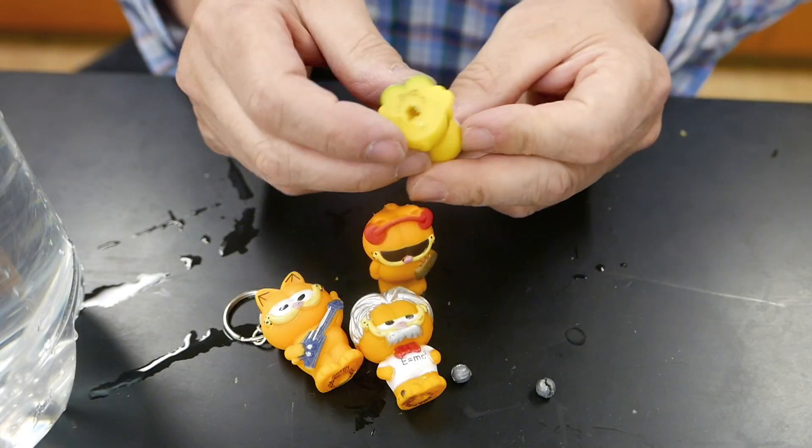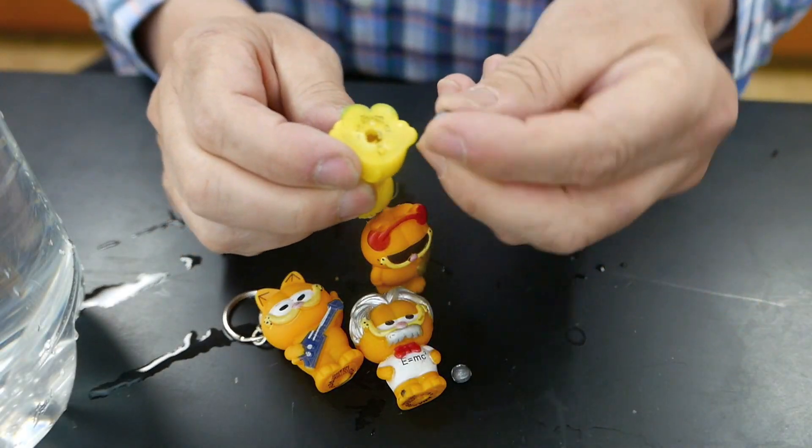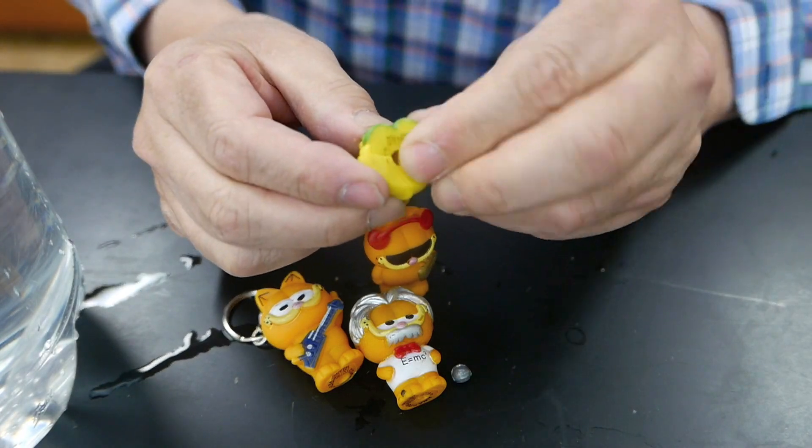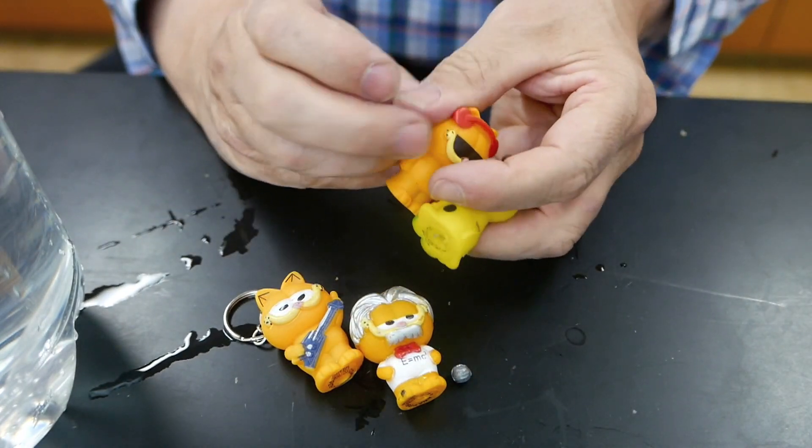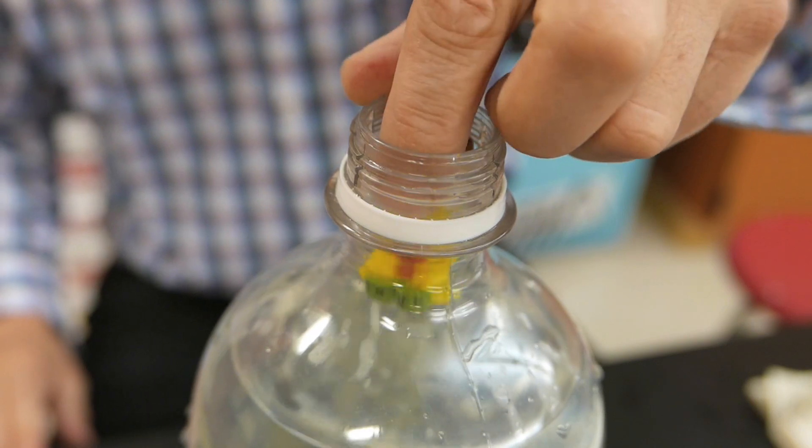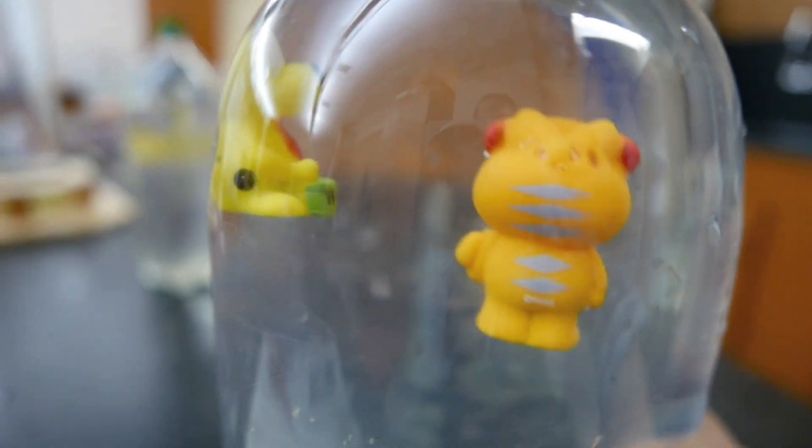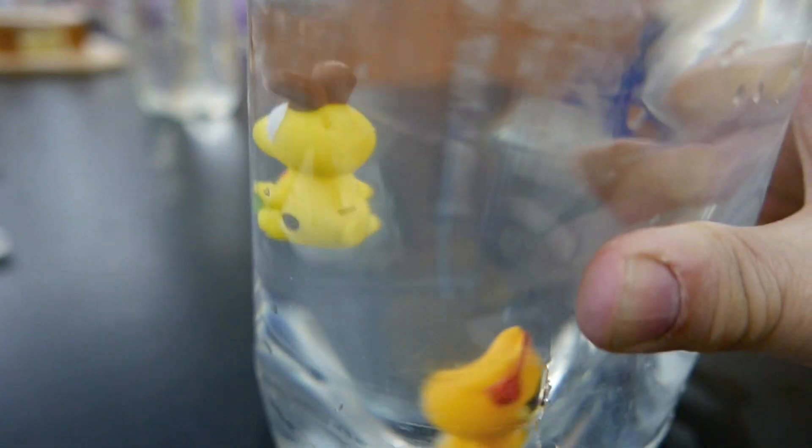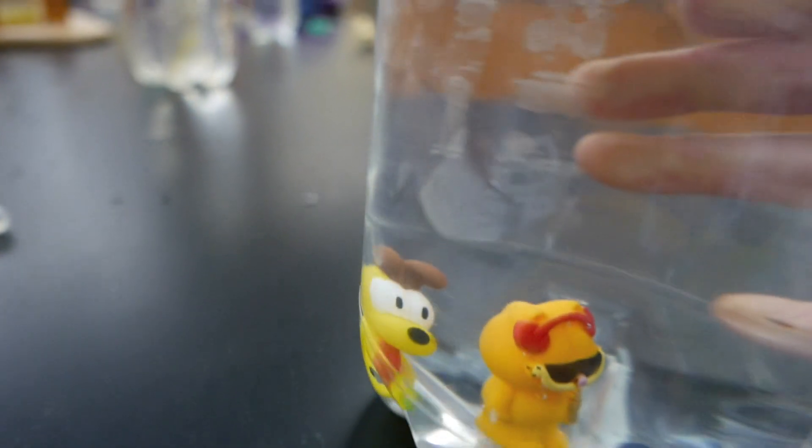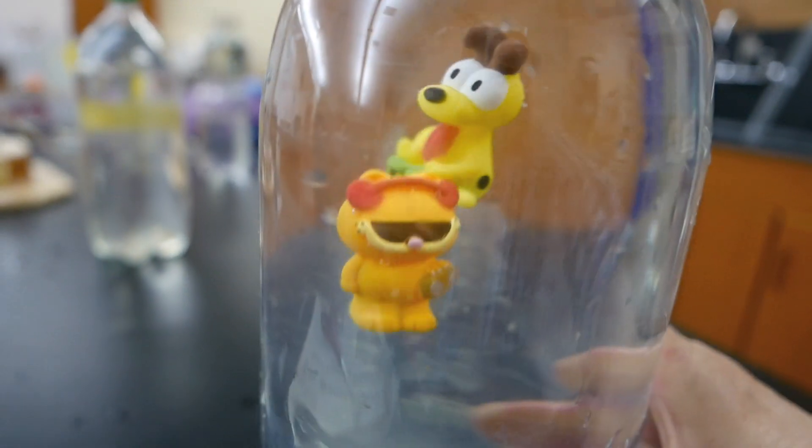These plastic keychain figures make great divers also. I simply add a small weight in the hole in the bottom just to see that it barely floats, and then add it to your bottle. This is a 3 liter bottle instead of a 2 liter, which gives me a little bit more room. And when I squeeze it, down they go. So here I have Garfield and Odie bouncing up and down just like the other divers.